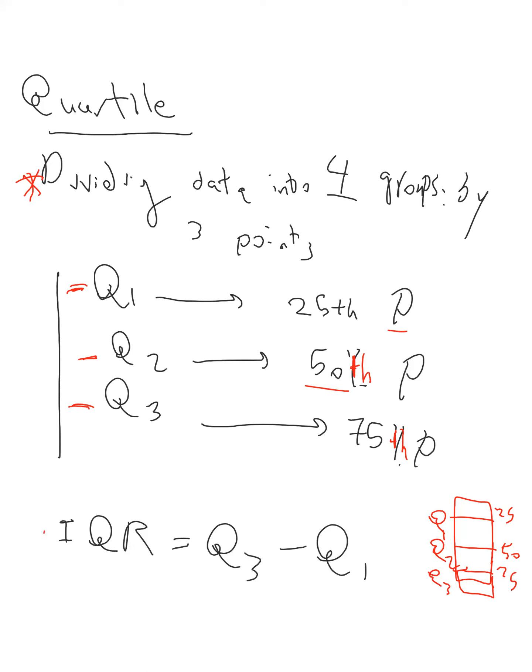And we have a concept, it's called IQR, or inter-quartile range, which is the Q3 minus Q1. And the more the difference between Q3 and Q1, the more the spread of the data set we will expect to have.